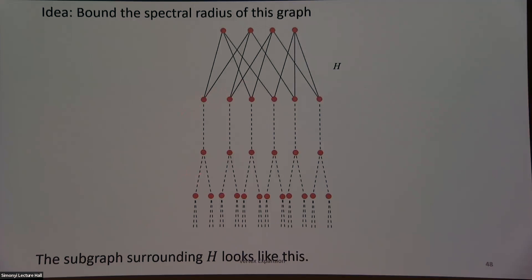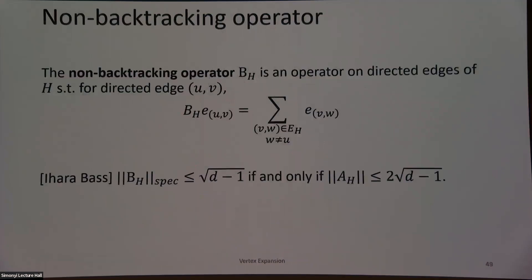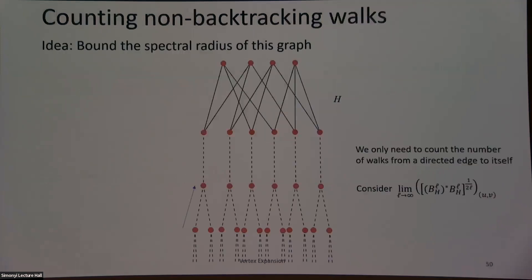We want to bound the spectral radius of something that looks like our original gadget extended in a tree-like way. We're going to do this by bounding the spectral radius of the non-backtracking operator. The non-backtracking operator on a directed edge sends that directed edge to all potential locations respecting the direction, but not backtracking. It's actually sufficient to bound the spectral radius of this non-backtracking operator if we want to bound that of the original adjacency matrix.